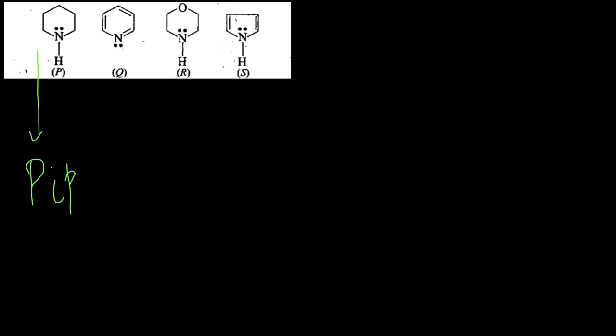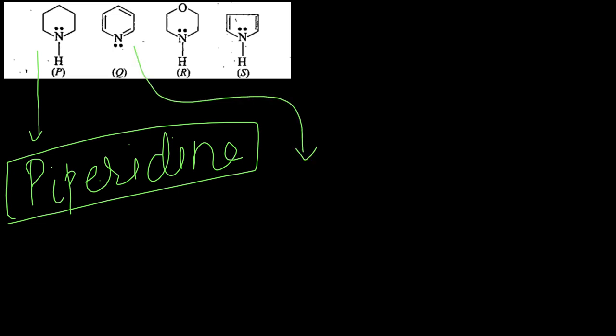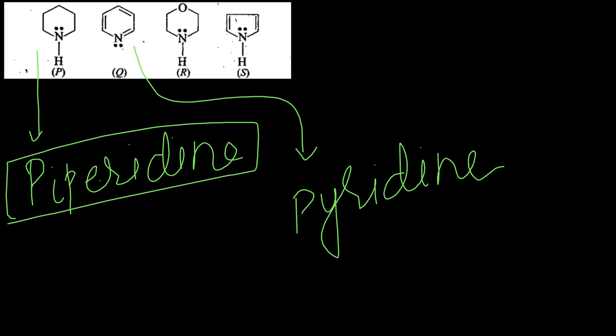Many times in questions, they will give you the names of molecules and ask you to compare basic strengths. The first molecule is called piperidine, the second Q is called pyridine. If you don't know these names, I recommend you write them down. The third is called pyrrole.